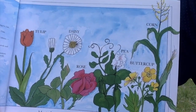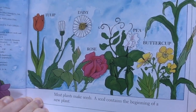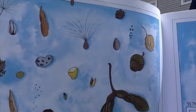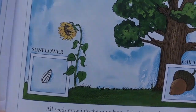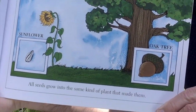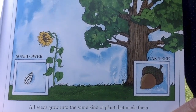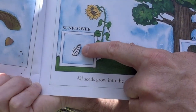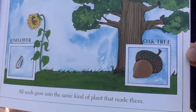Most plants make seeds. A seed contains the beginning of a new plant. The seeds are different sizes, shapes, and colors. All seeds grow into the same kind of plant that made them. Here's a sunflower and the sunflower seed. Here's an oak tree and the acorn that made it.